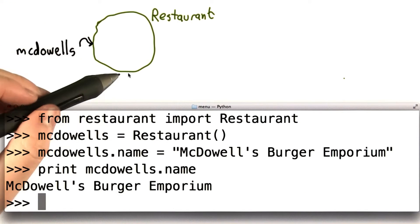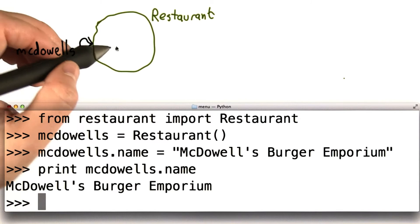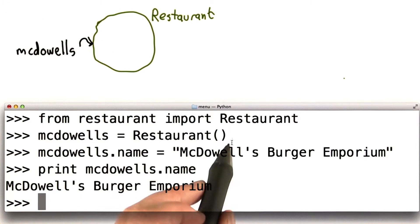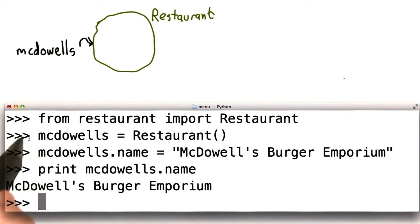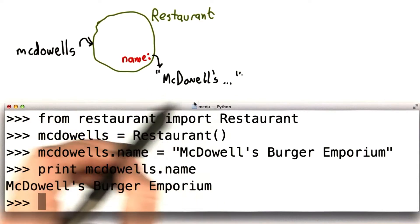Note that adding an attribute doesn't create a new object. It just adds attributes to that object. So we already had our restaurant object. That was created when we did this. We had a new instance of it, and we labeled it McDowell's. Now we've taken that object, and we've added an attribute name to it, and we've given it some value.